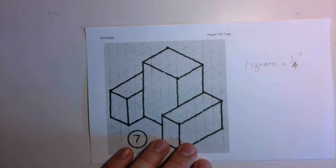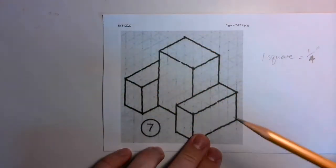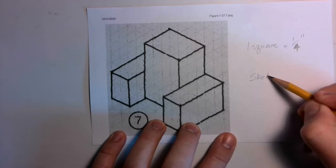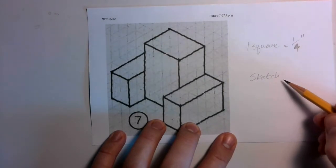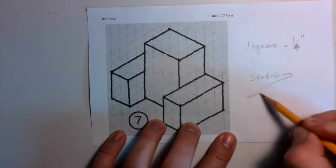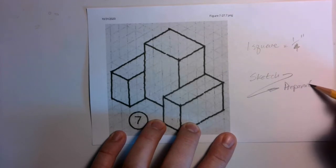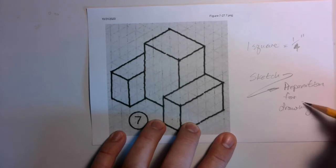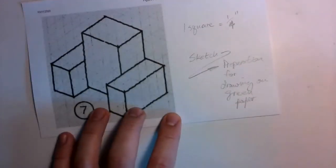So the idea of this exercise is to be able to sketch out this drawing to prepare for actually drawing this on green paper, on the real green graph paper. So the sketch is in preparation for drawing on green paper with instruments.